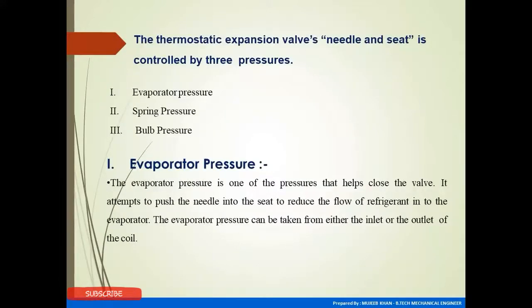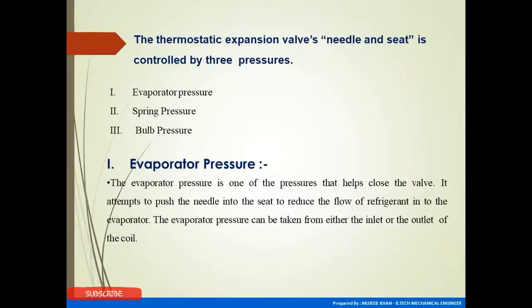The thermostatic expansion valve needle and seat are controlled by three pressures: evaporator pressure, spring pressure, and bulb pressure. The evaporator pressure is one of the pressures that helps close the valve — it attempts to push the needle into the seat to reduce the flow of refrigerant into the evaporator. The evaporator pressure can be taken from either the inlet or the outlet of the coil.